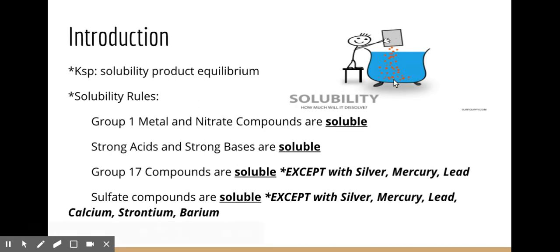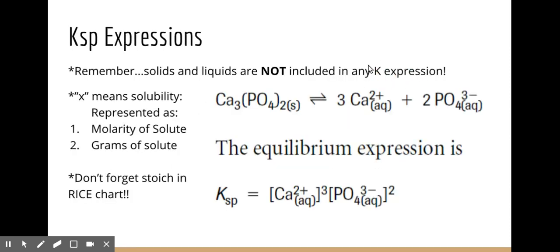To summarize key terms: soluble means it's going to split apart into its ions; insoluble means it will not split into its ions and instead forms a precipitate, which is a solid that appears in the solution. The solute is the thing being dissolved, the solvent is the stuff doing the dissolving, and once mixed together they become a solution.